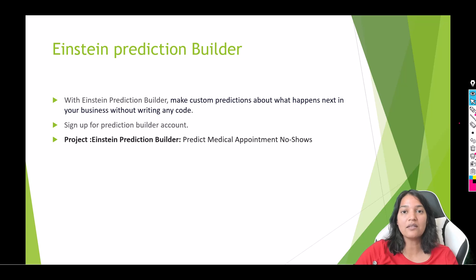In this particular section, we are going to use Einstein Prediction Builder to predict if a patient is going to be a no-show or if they are going to show up to their appointment.